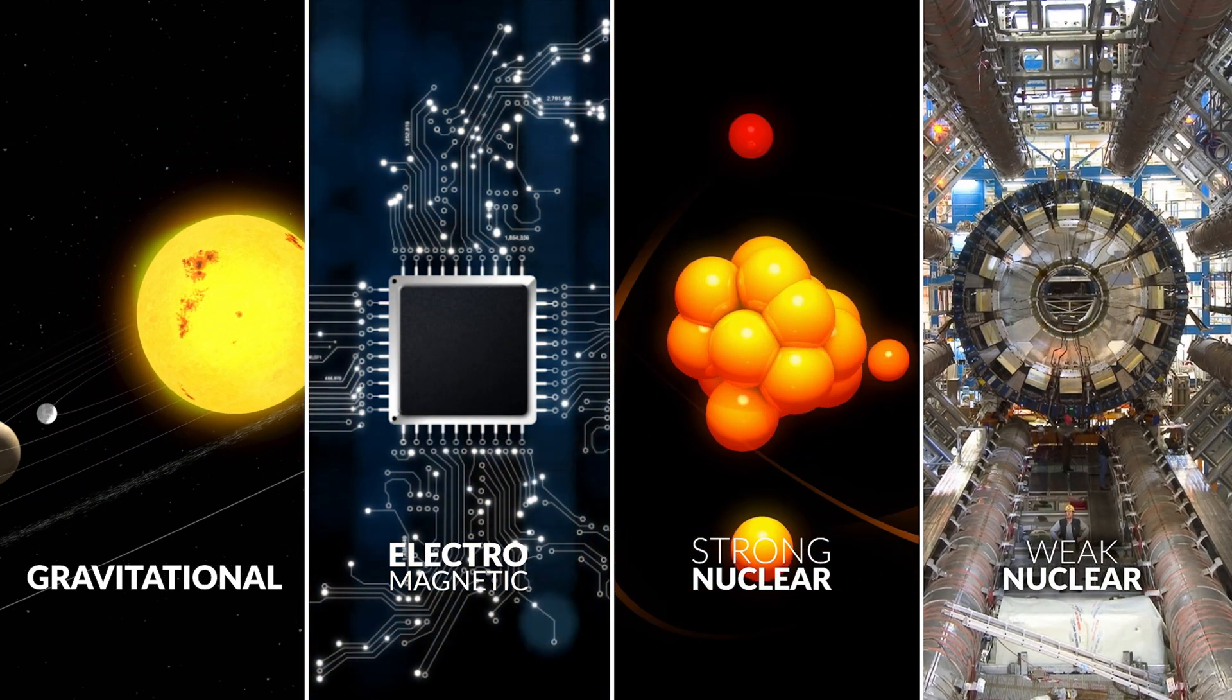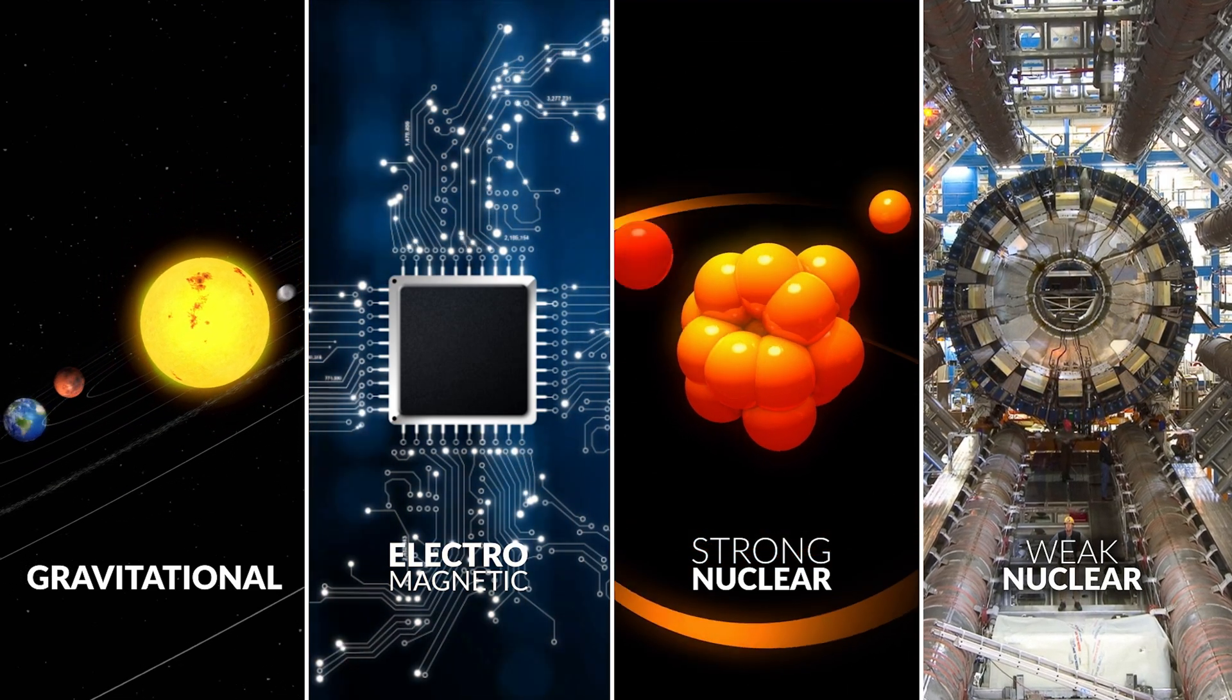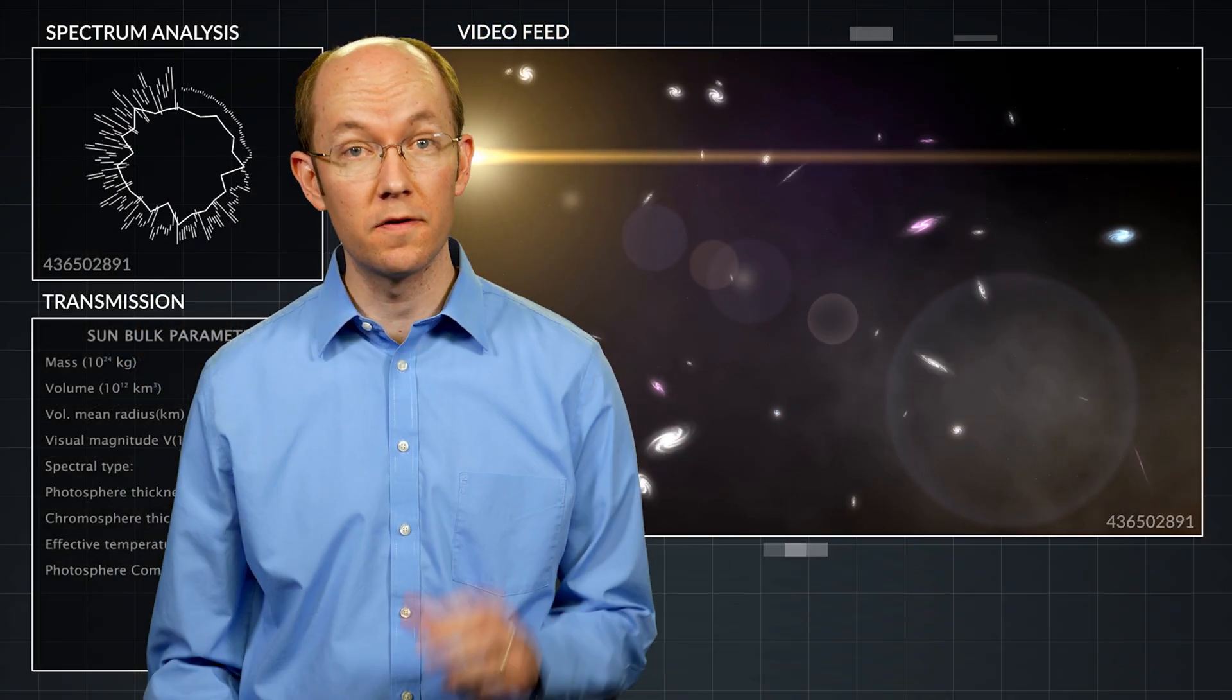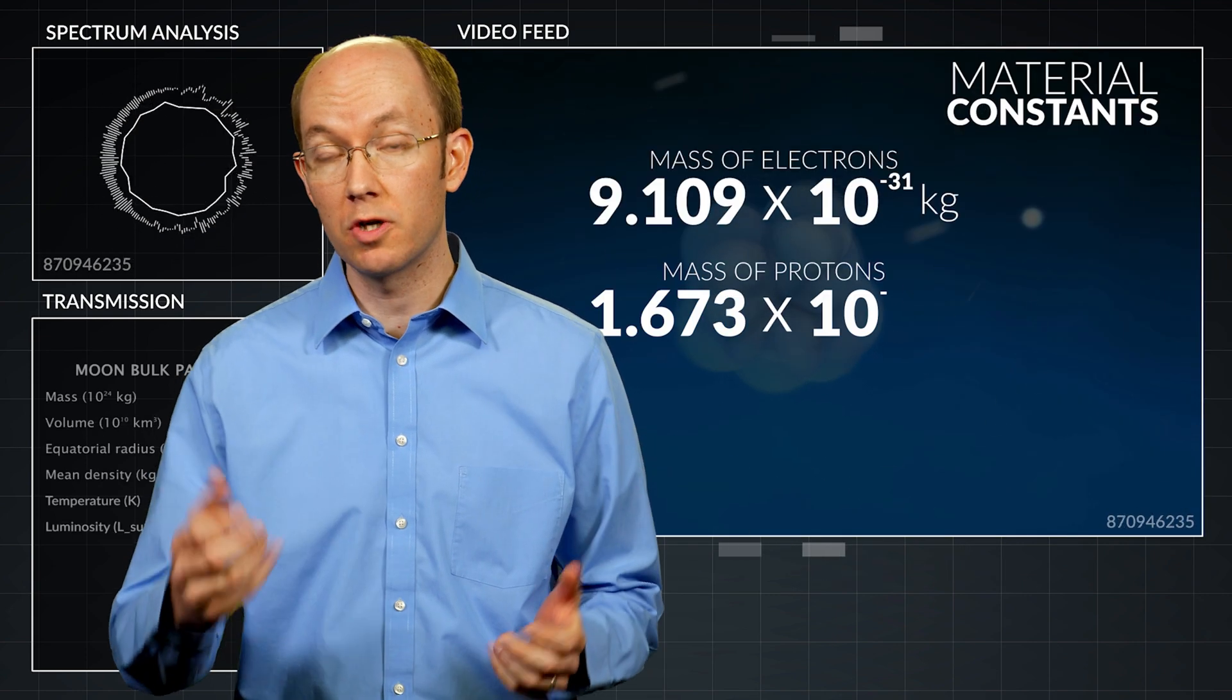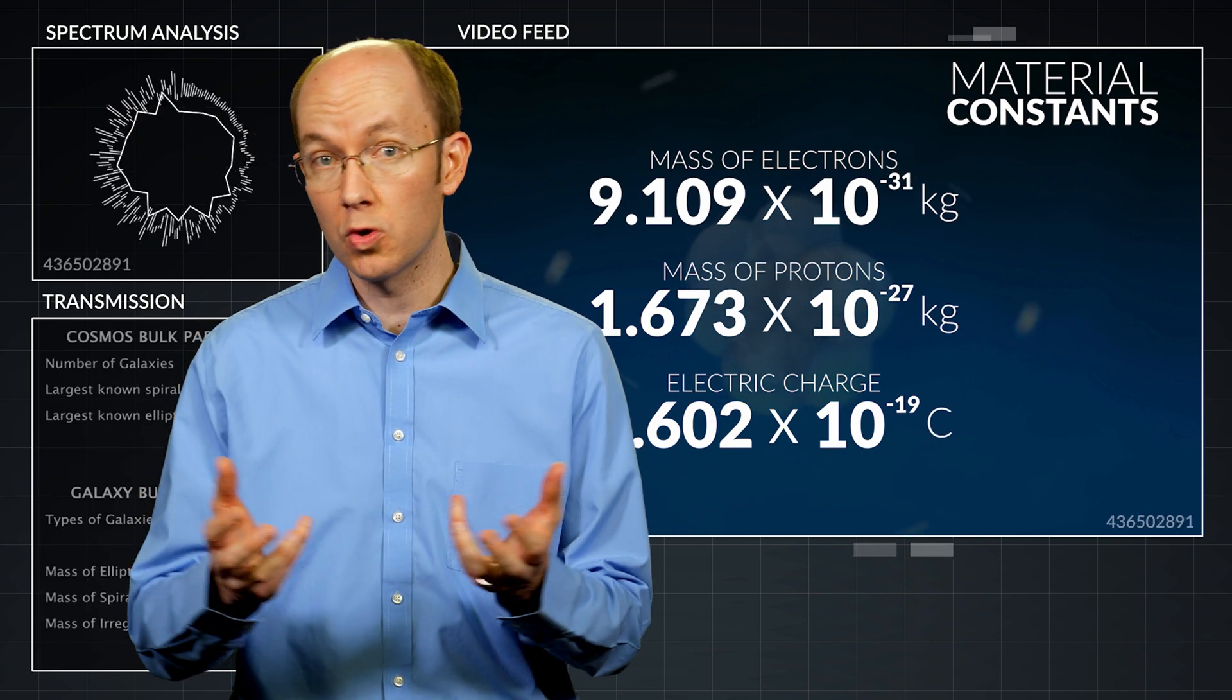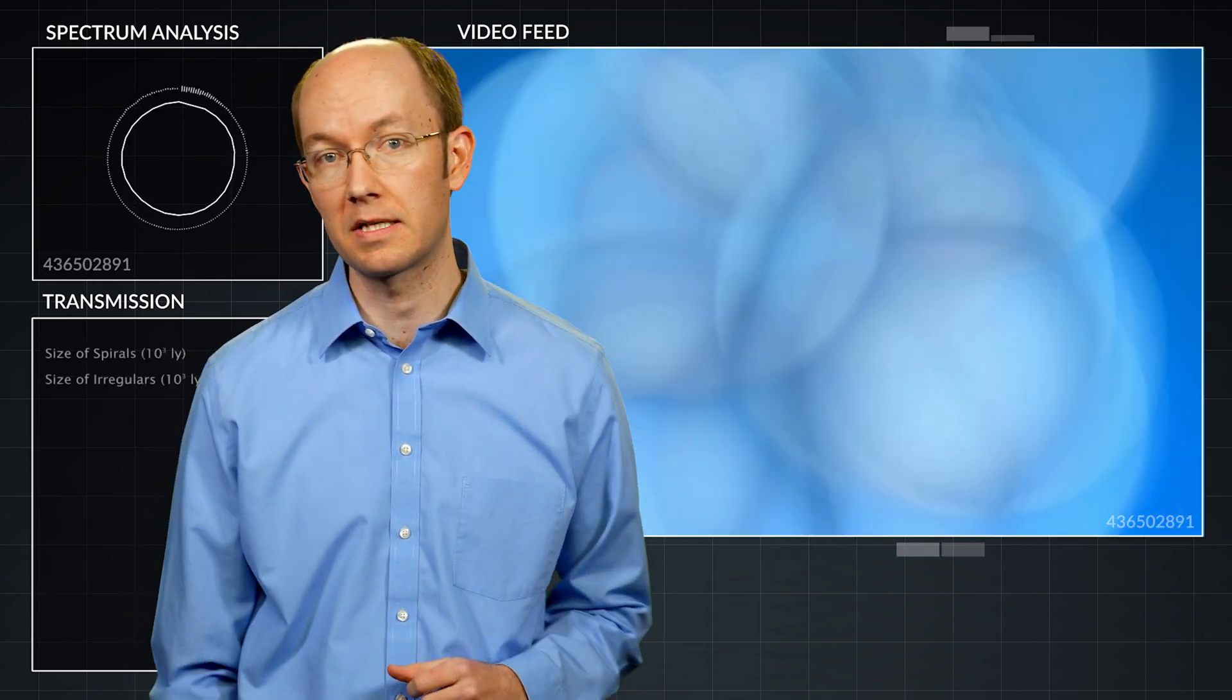Each of these forces has a relative strength and scale of operation that is finely-tuned to balance the others. The relations of these forces depend on the finely-tuned arrangement of our cosmos, from the material constants such as mass and charge of elementary particles, to the spatial relations for how each force is exerted, to the universal physical constants that balance their effects.